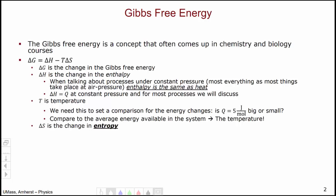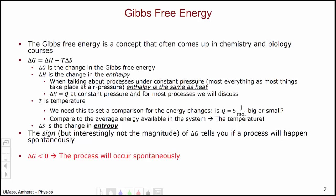The last quantity, this delta S, is the change in the entropy. It turns out that the sign, but interestingly, not the magnitude of delta G, tells you if a process will happen spontaneously. If delta G is negative, then the process will occur spontaneously. So, clearly, if you want to use this Gibbs free energy to understand if processes will be spontaneous or not, you need to know what entropy is.